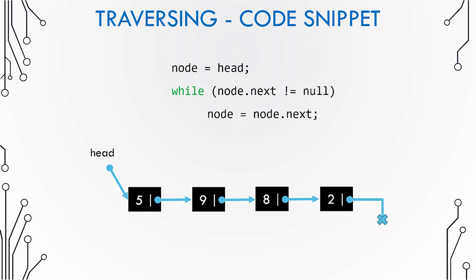Now let us see a code snippet and try to understand how this traversing mechanism works. This code snippet is from the C language. In the last video we saw the structure of a linked list node, so this code snippet builds on that structure.